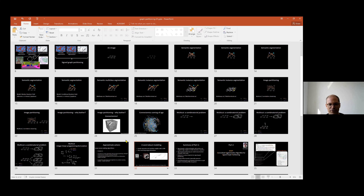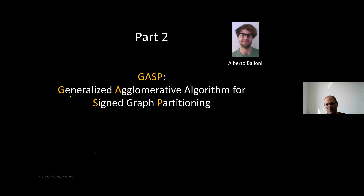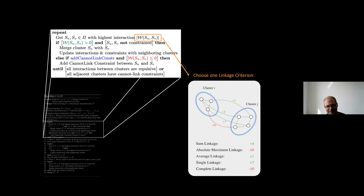Now on to part two. We have a neural network and know how to estimate edge weights - but what do we do with the signed graph? I'd like to talk about a family of algorithms, some old and some new, very simple algorithms namely from agglomerative clustering. Torsten Beyer was probably the first in our lab to find they could do something interesting, but Alberto Bailoni has really looked into this in much depth and this is essentially his work.